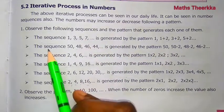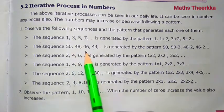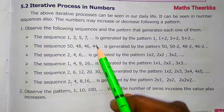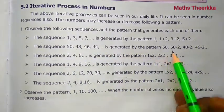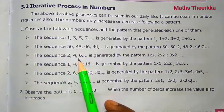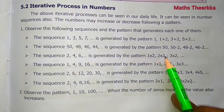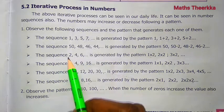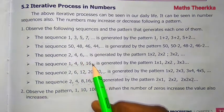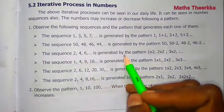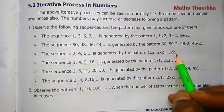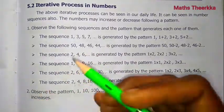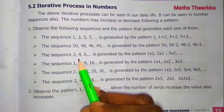The second sequence is 50, 48, 46, 44. The pattern is minus 2 each time: 50 minus 2 is 48, minus 2 is 46, minus 2 is 44, minus 2 is 42. The third sequence is 2, 4, 6. The pattern generates by multiplying natural numbers by 2: 1×2=2, 2×2=4, 3×2=6. Natural numbers multiplied by 2 gives the even number pattern.